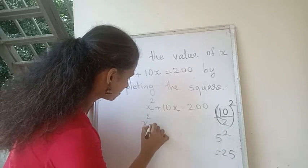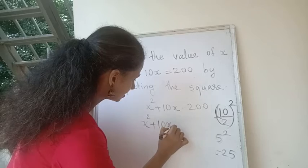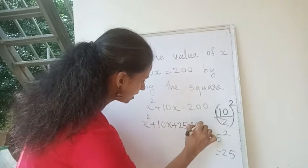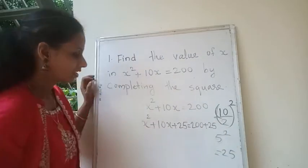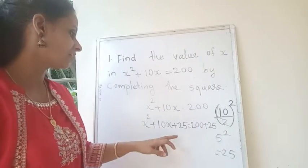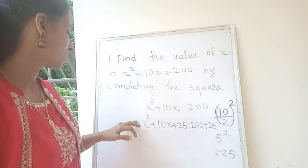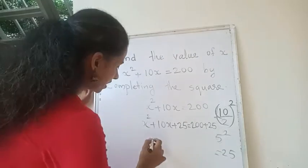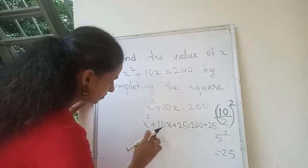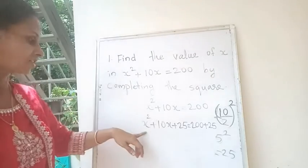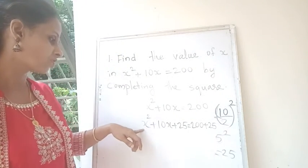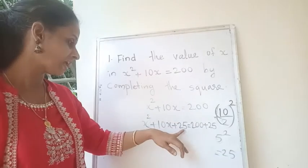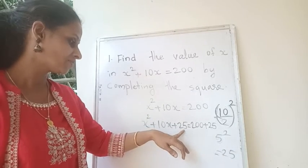5 squared is 25. We have to add this 25 to both sides of the equation, that is x squared plus 10x plus 25 equal to 200 plus 25. This is the way we write it by completing the square method. We will get one perfect square of the equation — the last number 25 is one perfect square.